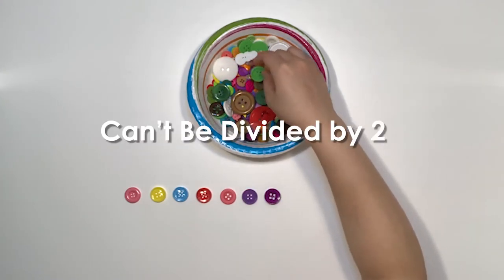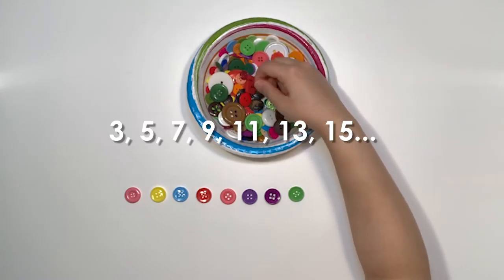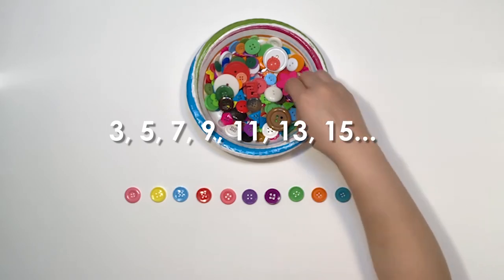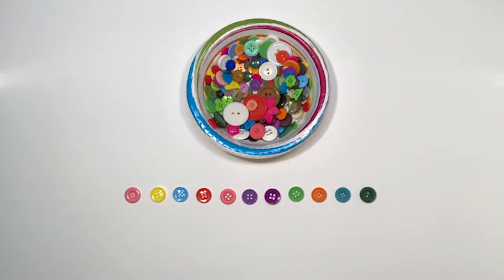That means a number that can't be divided into two equal groups. This includes the numbers 3, 5, 7, 9, 11, 13, 15, and so on. For my necklace I'm choosing 11 medium sized buttons in a variety of colors.